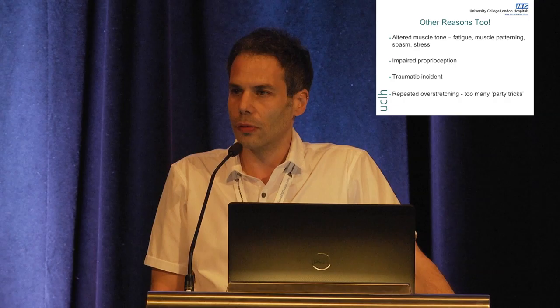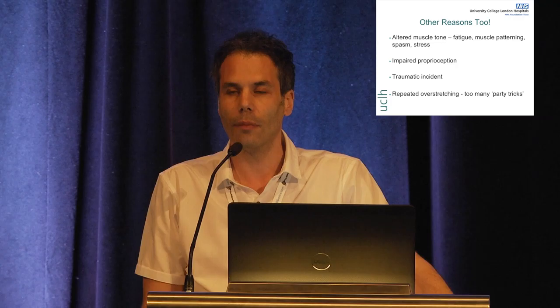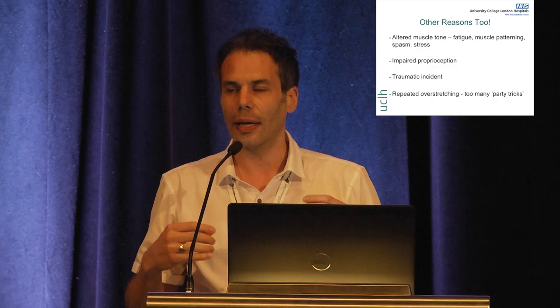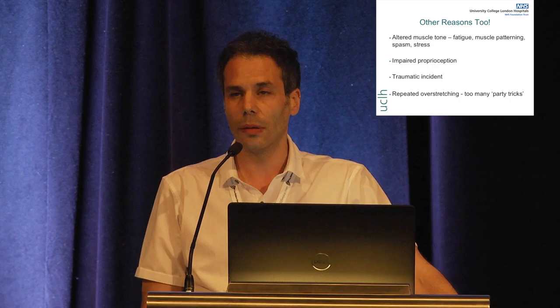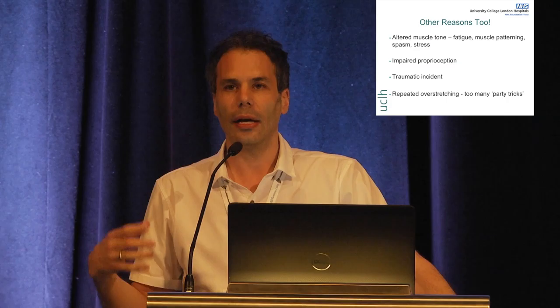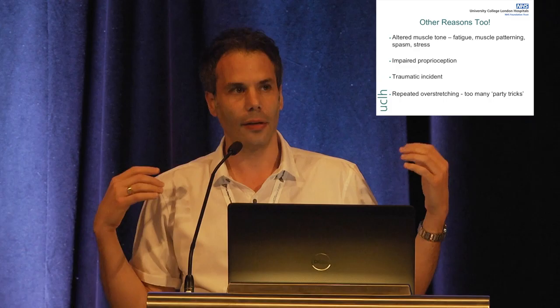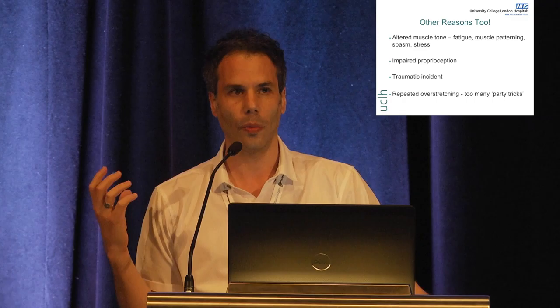There are also other reasons. Sometimes dislocations result from altered muscle tone. Muscle fatigue can lead to dislocations — if your muscles are tired and normally working to hold joints stable, they get fatigued and your joint can slip out of place. Altered muscle tone can occur when you sleep — as you fall asleep, your body relaxes, and in particular your shoulders might slip out of place because muscle tone has relaxed, and you wake up with a dislocation.